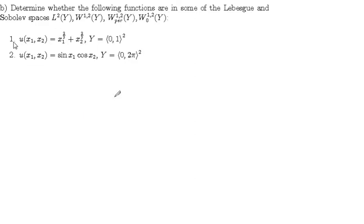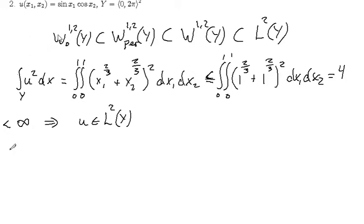Let us start with the first of these tasks. Consider if they are in one of these four spaces. Before we start, just recall that we have these inclusions: W₀ is a subset of W_pair, the space of periodic functions of this cell. W₀^(1,2) is a subset of W_pair^(1,2), and W_pair^(1,2) is a subset of the largest space, L².